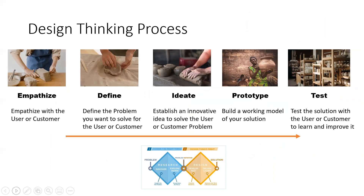So let's look at the design thinking process. The design thinking process is a five-step process. It starts with empathizing with the user or customer. Design thinking philosophy says you have to put the customer at the center of the problem — whatever you're trying to design solutions for, you are going to design it for users and not anybody else.